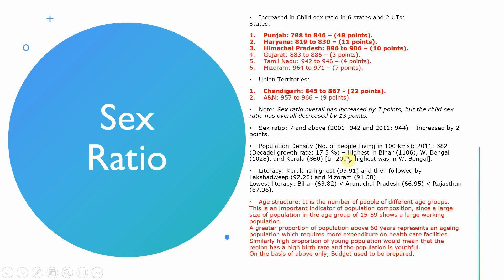Population density is the number of people living per 100 square kilometers. For 2011, India's population density is 382, with a decade growth of 17.5%. Bihar has the highest population density. West Bengal has 1028 people per 100 square kilometers, and Kerala has 860. In 2001, the highest density was in West Bengal. For literacy rate, Kerala leads at 93.91%, followed by Lakshadweep and Mizoram, while Bihar, Arunachal Pradesh, and Rajasthan have the lowest.